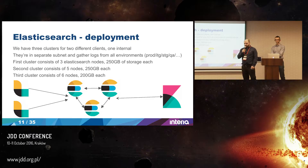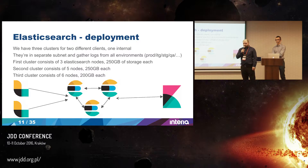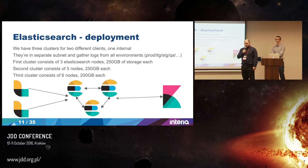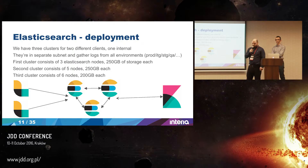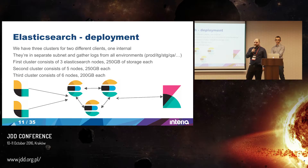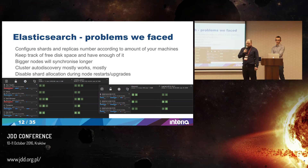We now have multiple Elasticsearch clusters. Each cluster has 20 nodes with 115 gigabytes each. Some clusters are small, some are big. Our biggest cluster has six nodes with 200 gigabytes each. We have multiple logs in Elasticsearch from multiple environments — staging, production, and integration.